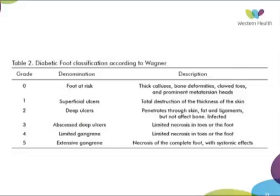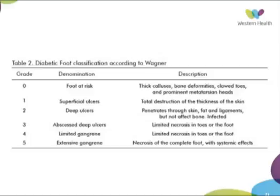Wagner has a classification system for ulceration that you may need to know. It's grade 0 to 5: grade 0 is foot at risk, usually a diabetic patient you're concerned about; grade 1 is superficial ulcer; grade 2 is deep ulcer; grade 3 is abscess; grade 4 is limited or forefoot gangrene; and grade 5 is whole foot gangrene. It often comes up in short answer questions.